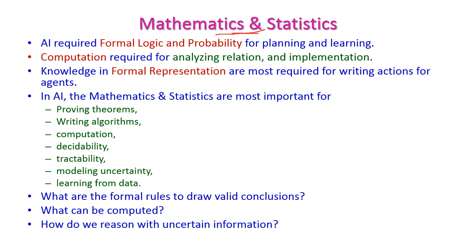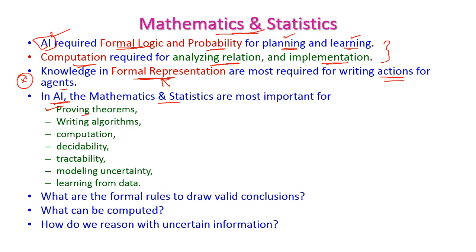The next foundational subject is mathematics and statistics. Agent programming requires knowledge about formal logic and probability for planning and learning. Computation is very much required for analyzing relations as well as implementation. Knowledge in formal representation is most required for writing actions for an agent. Mathematics and statistics are most important for proving theorems, writing algorithms, computations, decidability, tractability, modeling uncertainty, and learning from data.